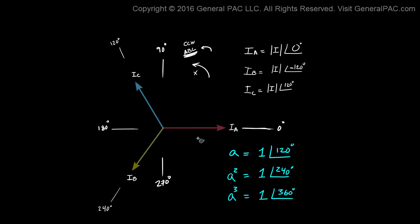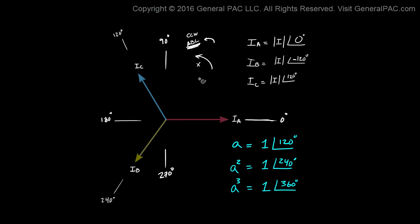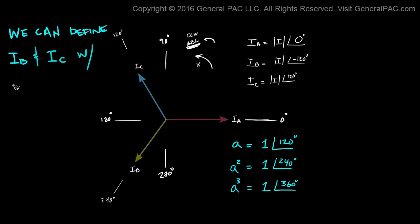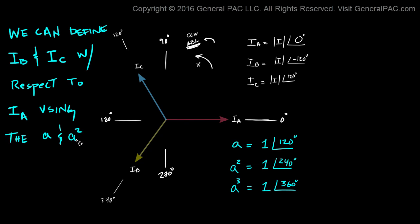The beauty of this A operator is that we can define IB and IC with respect to IA using the A and A superscript operators. We can define IB and IC with respect to IA using these operators — and that's the purpose of them.